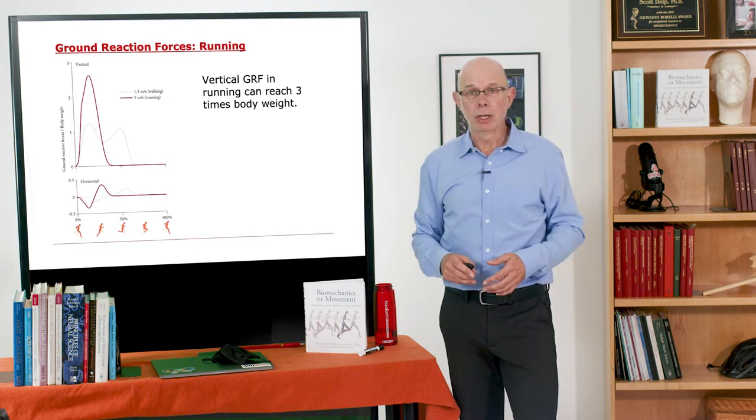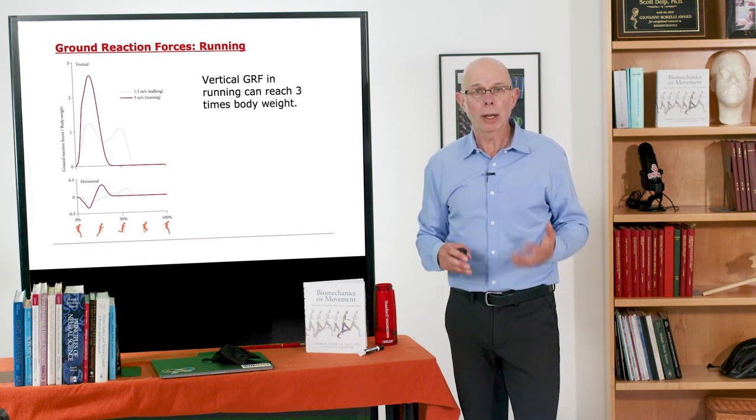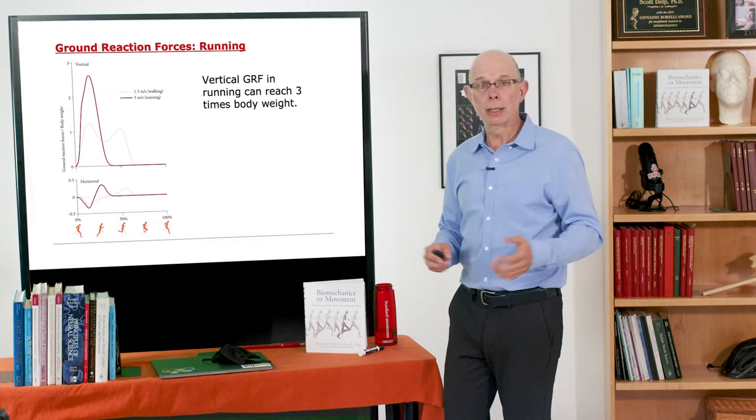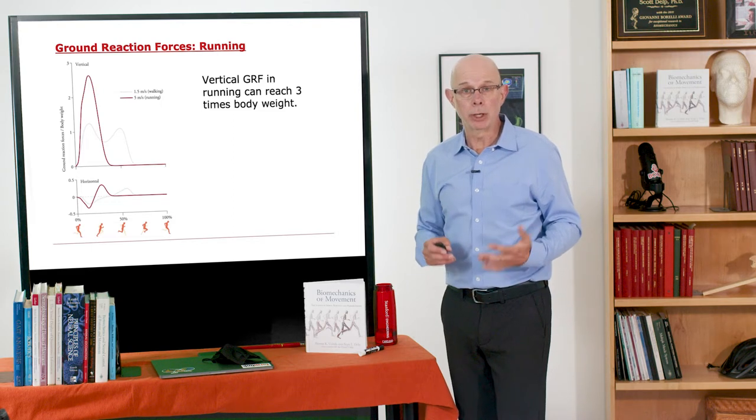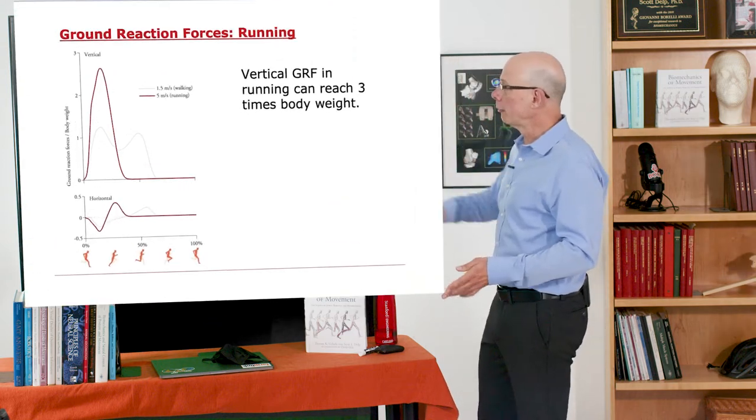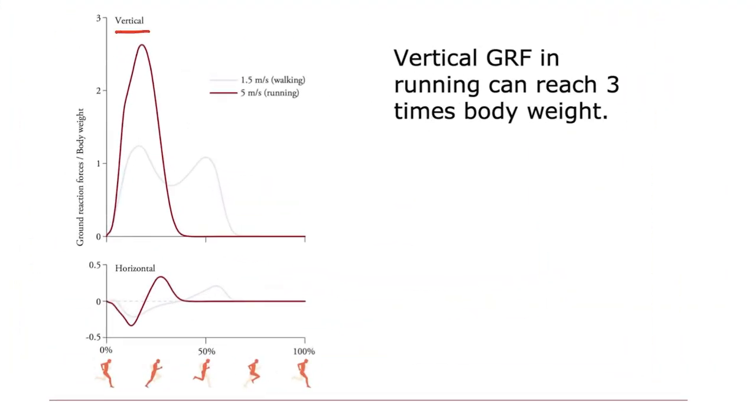Another big difference is the ground reaction forces. You saw that during walking, the ground reaction forces were about one body weight as you stand on one leg. In running, you're also standing on one leg, but you're doing that for a shorter period of time. So what I'm plotting here is the ground reaction force in the vertical direction and the horizontal direction versus the percentage of gait cycle. I've superimposed the walking ground reaction force here, and what you see is in running, it's much higher. It can reach easily three body weights, whereas in walking it's just one body weight. So the forces in running are much higher.